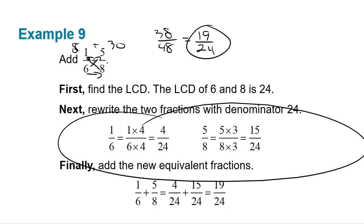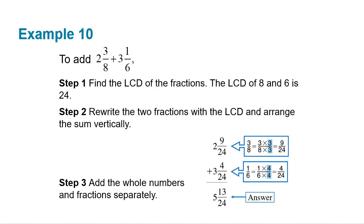If you're wondering why they call it a bow tie — the fractions and the cross-multiplying kind of makes a bow tie shape. That's why it's called the bow tie method.